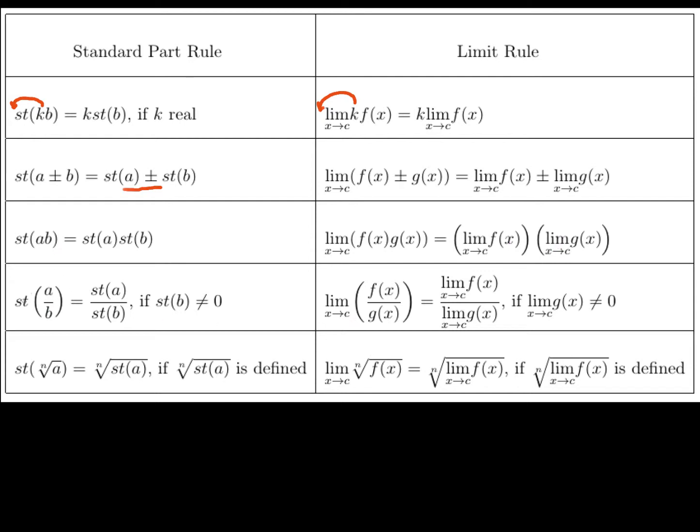And if I've got ratios, the standard part of a over b would be the standard part of a divided by the standard part of b, of course, provided the standard part of b isn't zero. Same is true for my limit. If I look at the ratio of f(x) over g(x), the limit as x approaches c, this is the ratio of their limits, provided that this limit isn't zero.